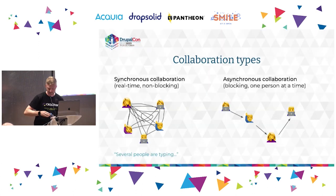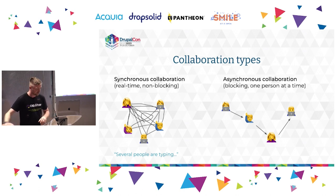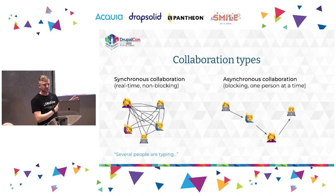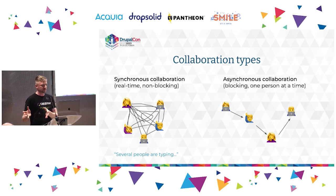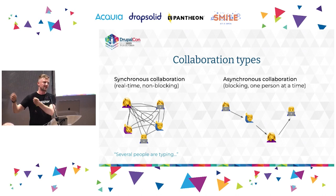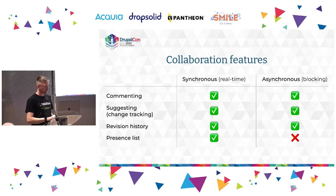Back to some theory: collaboration can be split into two types. Synchronous collaboration is real-time and non-blocking — multiple people can work simultaneously on a single piece of content. Asynchronous collaboration is still blocking, but you can leave comments, the other person responds, and someone else applies changes. Both modes make sense, and typical collaboration features apply to both, except presence avatars which make little sense in asynchronous collaboration.